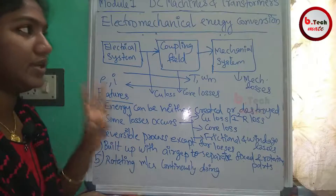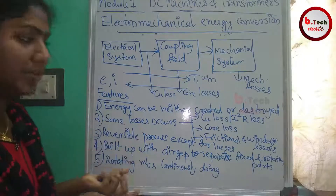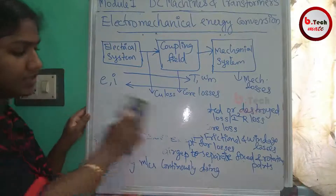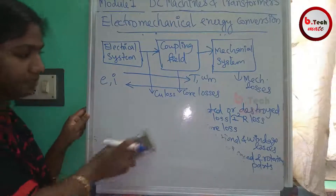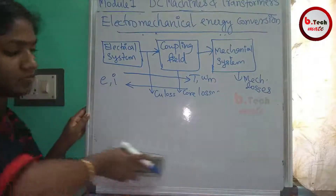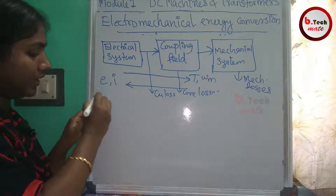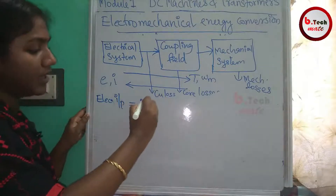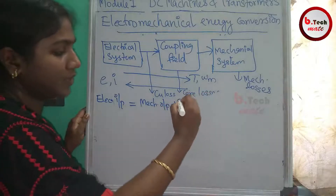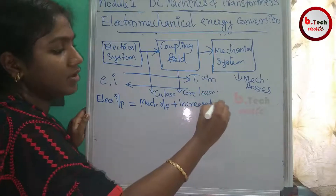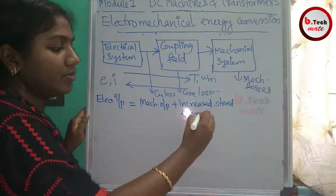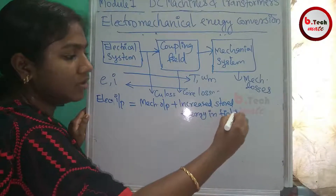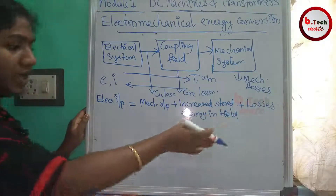Now we will discuss the energy balance equation. The equation means: Electrical Input equals Mechanical Output plus Increased Stored Energy in the Coupling Field plus Losses. Increased stored energy in the field plus losses — this is the basic equation.